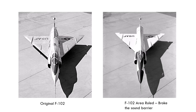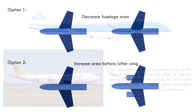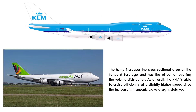The area rule can be seen at work in many other designs as well. It allows for two solutions to create a smooth cross-sectional area distribution: we can either decrease the area of the fuselage where the wings and tails are attached, or we can increase the cross-sectional area before the wings and tails. A good example is the Boeing 747, known for its distinctive hump, which houses the cockpit and upper passenger deck and increases the cross-sectional area of the forward fuselage, evening the volume distribution over the length of the aircraft.